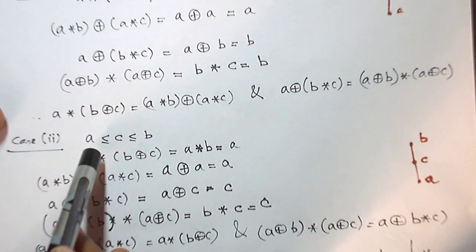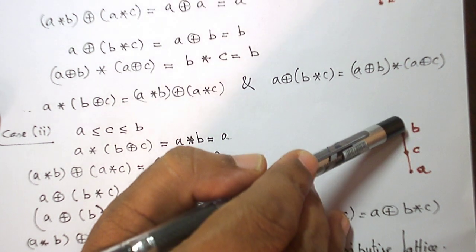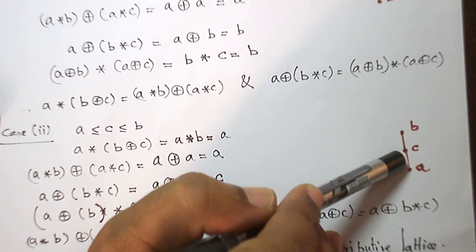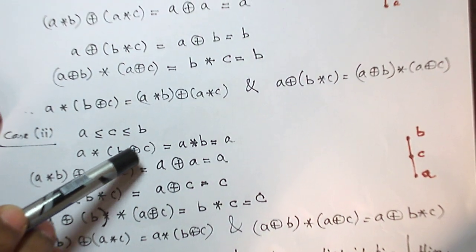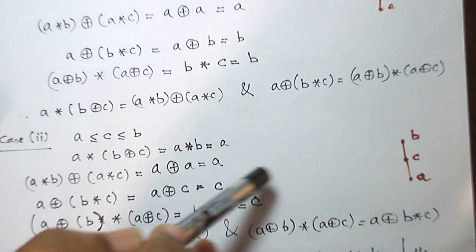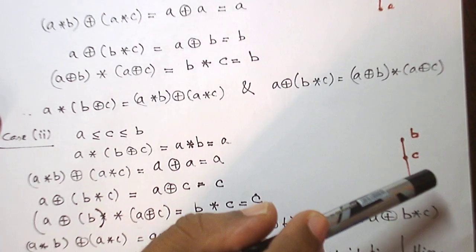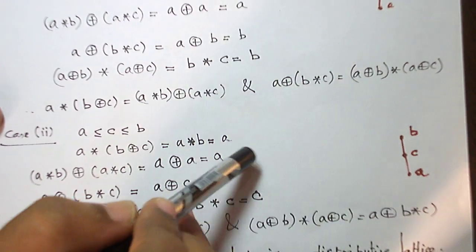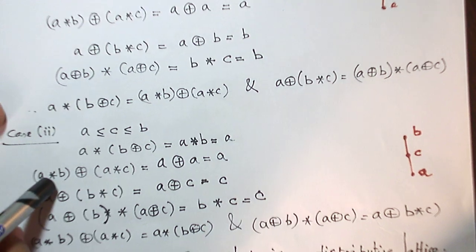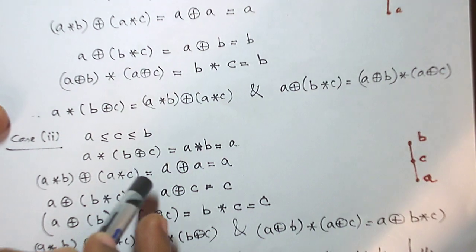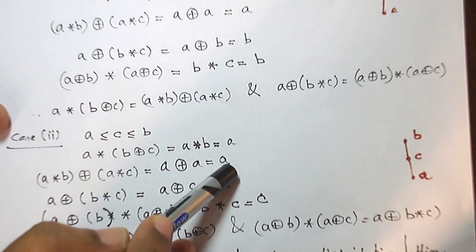Similarly, for the second case A ≤ C ≤ B — this is the Hasse diagram: A is smaller, C is next, B is the largest. For A∧(B∨C): B∨C — the larger among B and C — is B. Then A∧B — the smaller among them — is A. The right-hand side (A∧B)∨(A∧C): A∧B is A, A∧C is A, and A∨A by idempotent law is A. Both sides are equal.